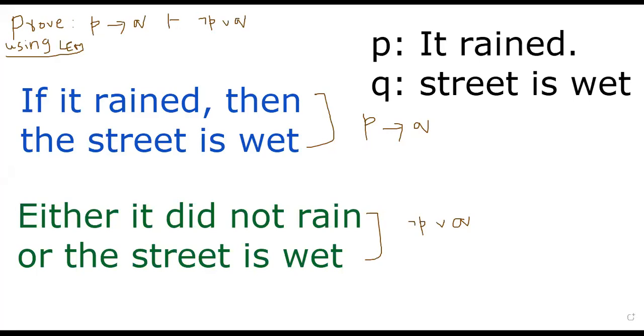Hello, welcome back. In this segment, I will use the Lem rule for natural deduction to prove that if P implies Q, then we can conclude it is same as not P or Q. So my goal is to use the Lem to take this as the hypothesis or premise and come to the conclusion it's same as not P or Q.